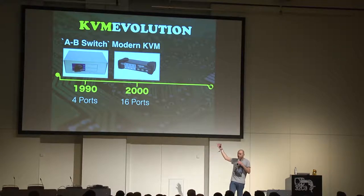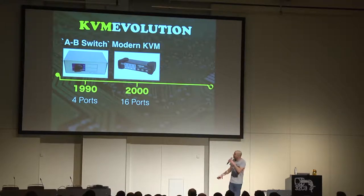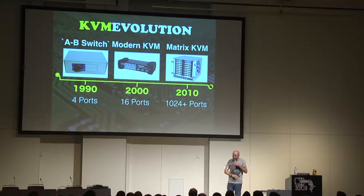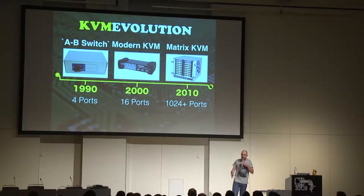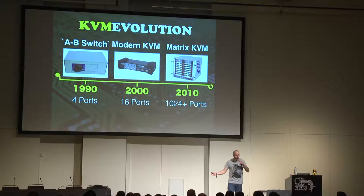Modern KVMs are really cool — they support a whole lot of inputs and outputs and look great too. Then came the next evolution: matrix KVMs, which are absolutely monsters. They have thousands and thousands of ports, support KVM over IP, and are usually implemented in huge enterprises and server rooms.